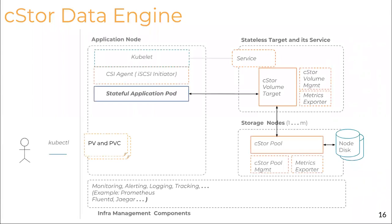Kiran, maybe this will become clearer in the demo, but I'm struggling a little to understand which bits are internal components of the software and which are logical components. When we say the C-Store data engine — are we talking about a container per node, a container per pool, a container per volume? I'll actually take that question as part of the demo and I can show that.